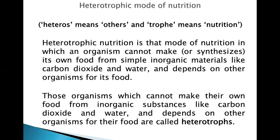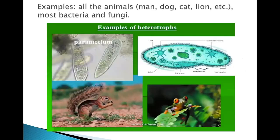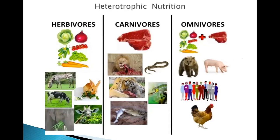Those organisms which cannot make their own food from inorganic substances like carbon dioxide and water, and depend on other organisms for their food, are called heterotrophs. Examples are all animals — man, dog, cats, lion — and most bacteria and fungi.